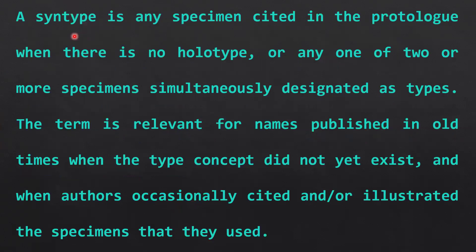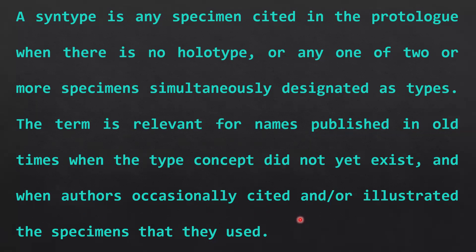Next, the syntype. A syntype is any specimen cited in the protolog when there is no holotype, or any one of two or more specimens simultaneously designated as types. The term is relevant for names published in older times when the type concept did not yet exist and authors occasionally cited or illustrated the specimens they used.